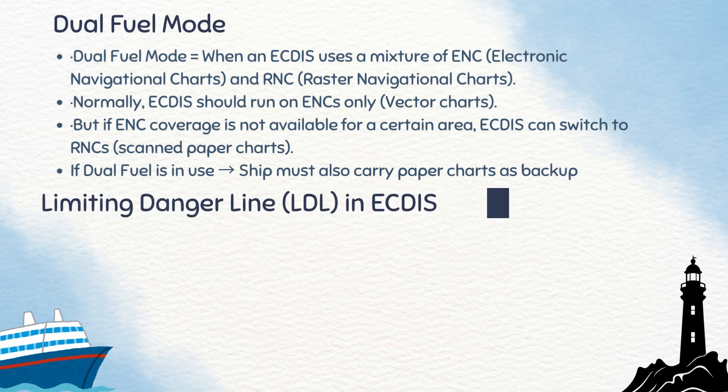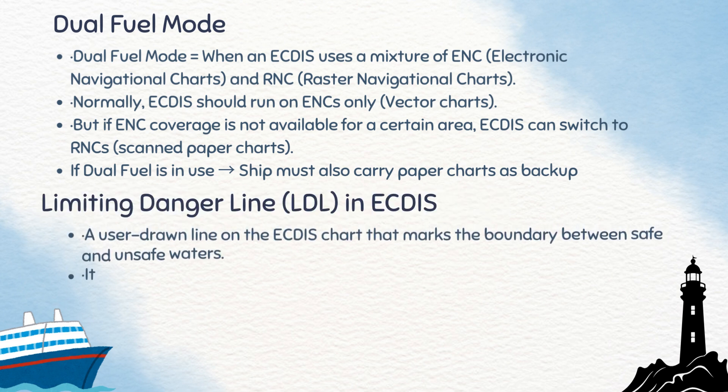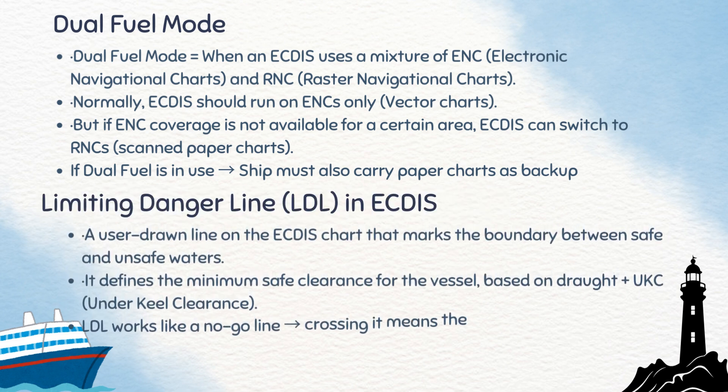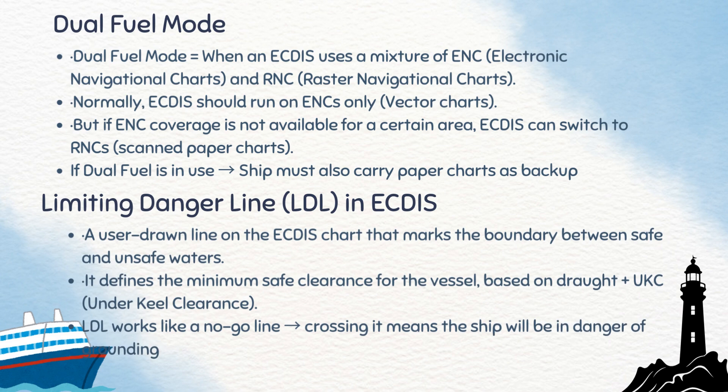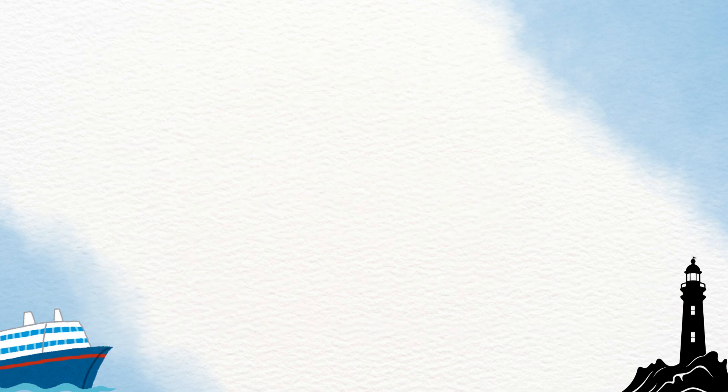Now, limiting danger lines in ECDIS. The limiting danger line is a user-drawn line separating safe waters from unsafe waters. It is calculated based on the vessel's draft and under keel clearance. Crossing this line means the ship is entering a danger zone — it acts as a clear no-go boundary for navigation.